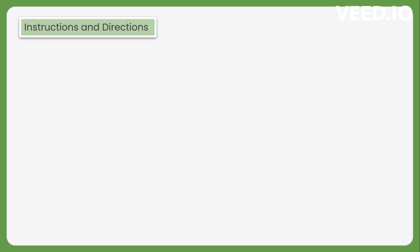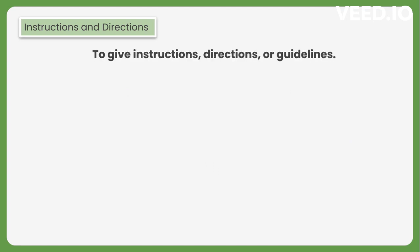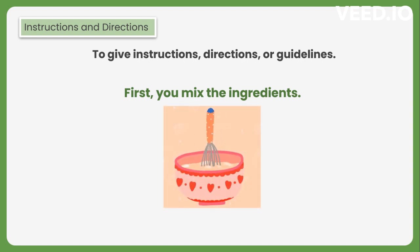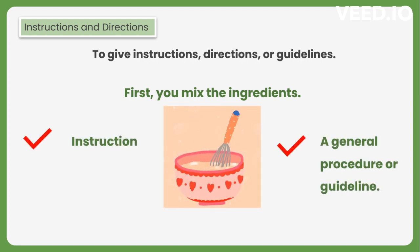Next, to give instructions and directions. We can use simple present tense to give instructions, directions, and guidelines. For example, first, you mix the ingredients. Here, you are instructed to mix the ingredients as the first step. So, as it gives instructions to carry out a particular process, we use simple present tense.